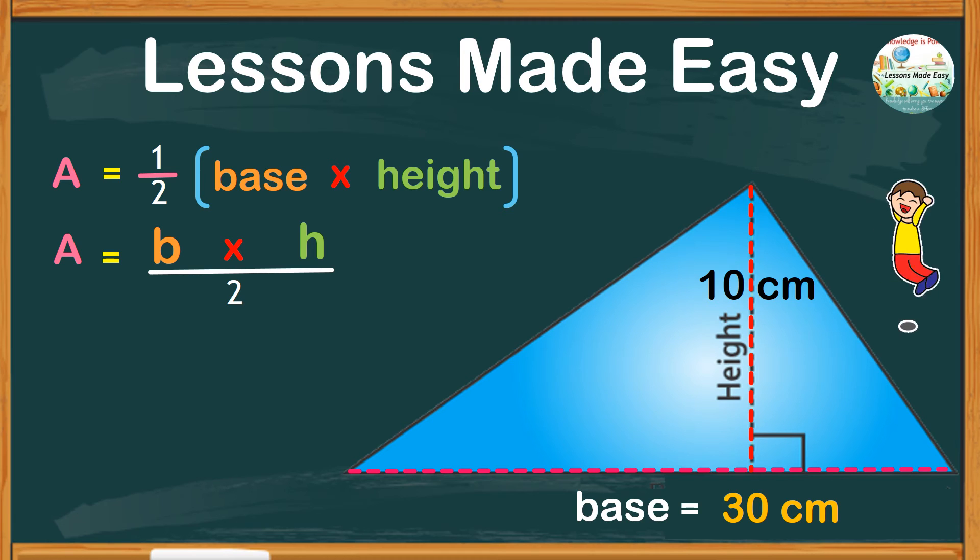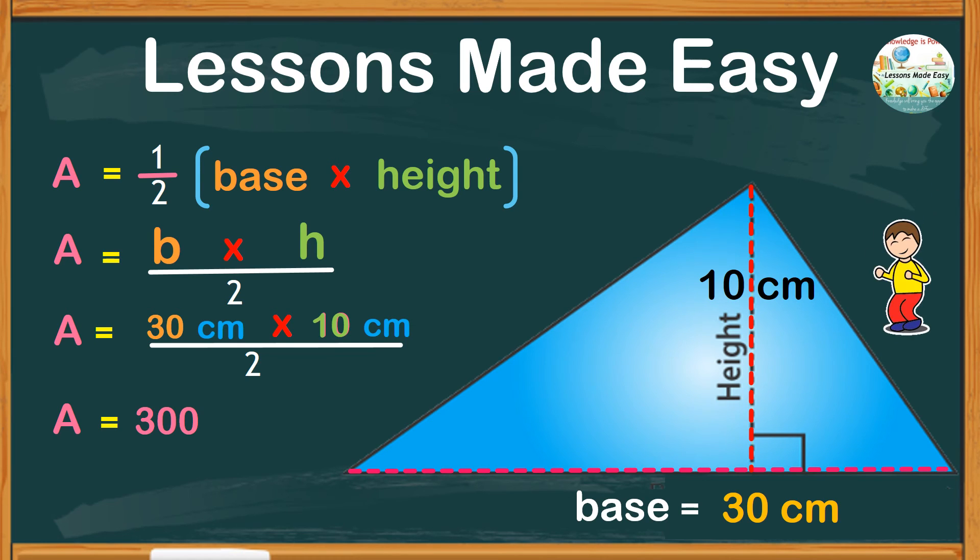Then substitute the values. A for area equals the base, which is 30 centimeters, times the height of 10 centimeters, all divided by 2. So area equals the product of 30 and 10, which is 300, with the unit cm that was used twice, so we write 2 as the exponent. And this has to be divided by 2 because we only need half of this number. So 300 divided by 2, we get 150 square centimeters for our answer. We have area equals 150 square centimeters.